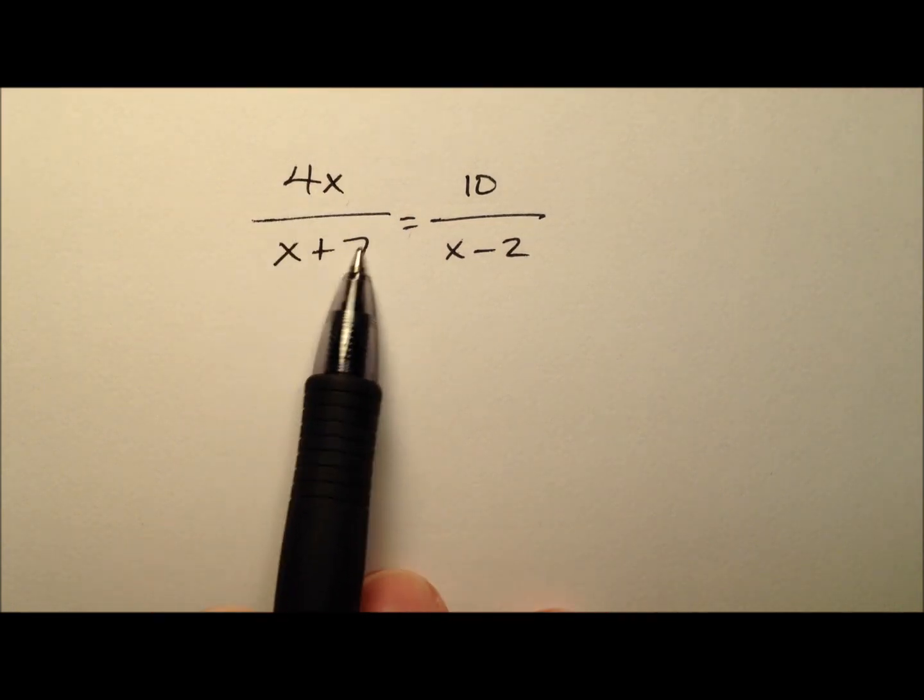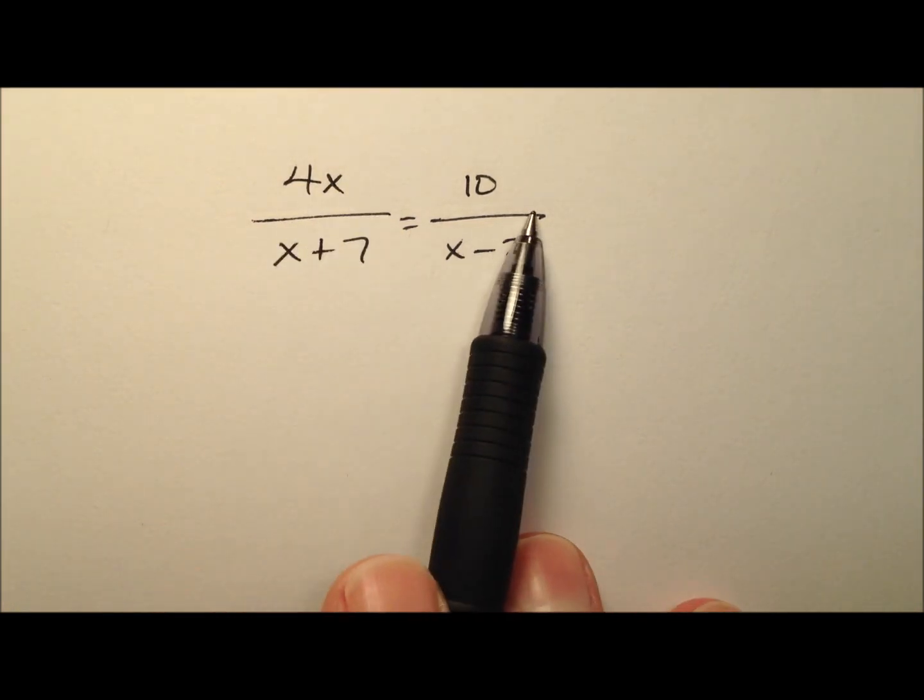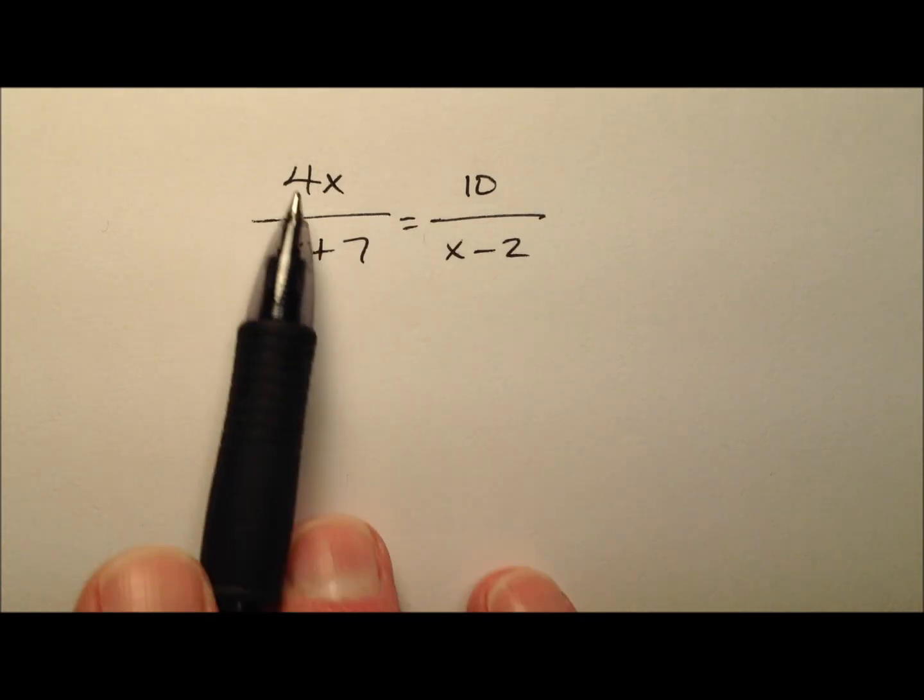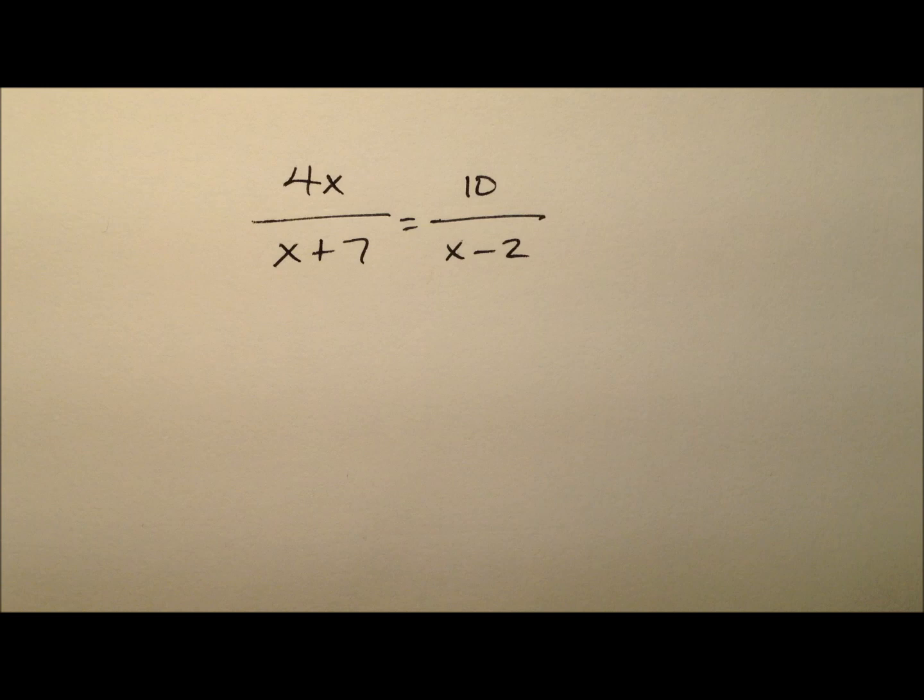So we have this ratio or this fraction equaling another ratio or fraction, that's what causes this to be a proportion, and we know that cross products will be equal to each other, so that's how we'll build our equation.